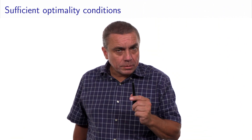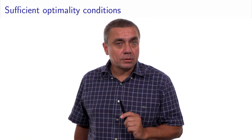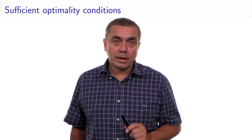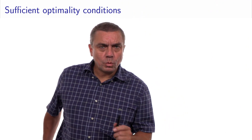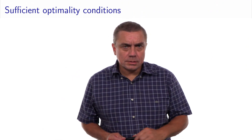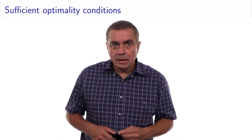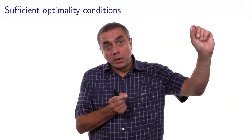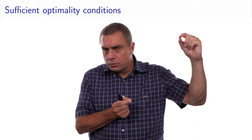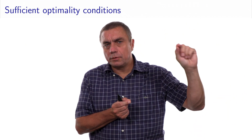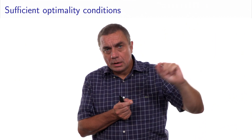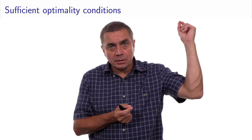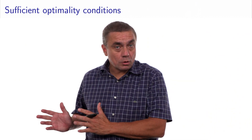Essentially, the sufficient optimality condition says: if the objective function is increasing along each basic direction — remember, the reduced cost is the slope along the basic direction — then if the function is going up in all basic directions, we are at an optimum of the problem.